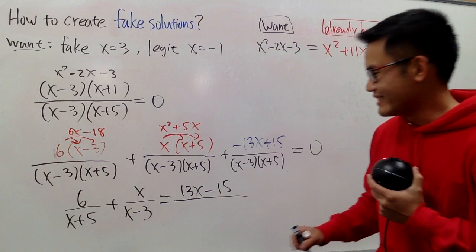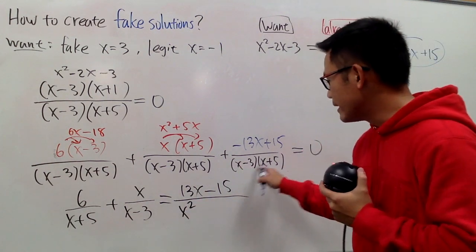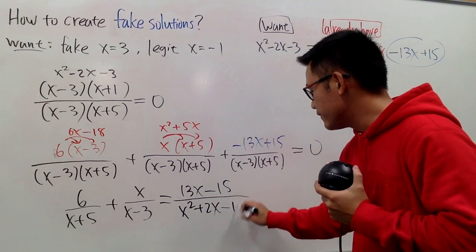So I will multiply this out for you guys. x times x is x squared, and then x times 5 is 5x, and then minus 3x, so that's plus 2x. At the end, this times that is negative 15.